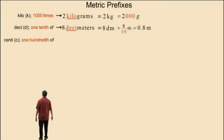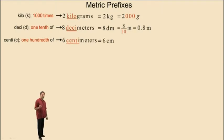Centi, abbreviated with the letter c, means one hundredth of. Therefore, 6 centimeters, which can be written as 6 cm, represents 6 hundredths of a meter, or 0.06 meters, right?